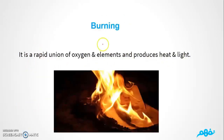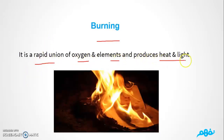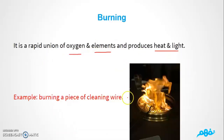What is burning? The burning process is a rapid union of oxygen and elements that produces heat and light. For burning to occur, you need oxygen gas plus any element, and it will produce heat and light. For example, burning a piece of steel cleaning wire.